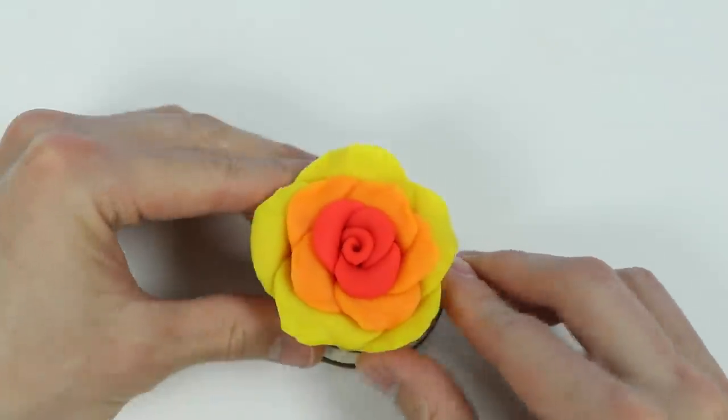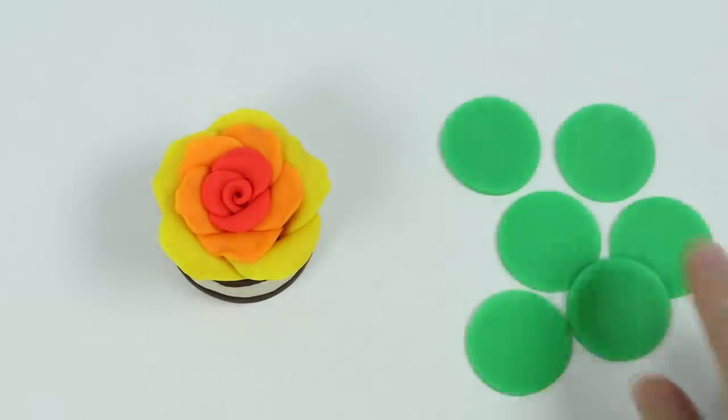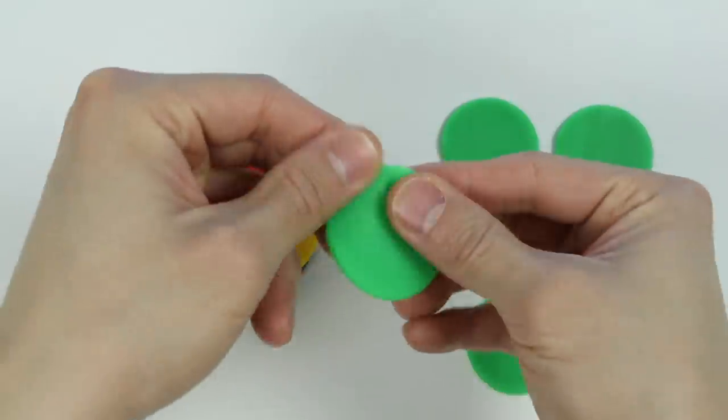Awesome, three more colors to go. Now let's make green rose petals. Let's wrap these around the yellow petals. Give me a minute.